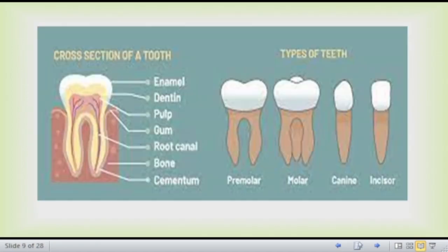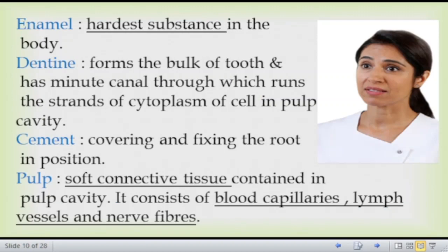Now the detailed structure of a tooth: the hardest part of the tooth is called enamel, which protects the sensitive inner parts — nerves and blood capillaries. Dentine forms the bulk of the tooth. Cement at the root helps to keep the root in position. Pulp is the soft connective tissue consisting of blood capillaries, lymph vessels, and nerve fibers.